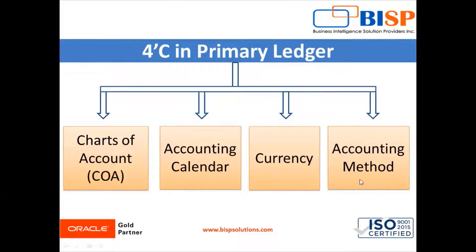The last component is the Accounting Method. Accounting method facilitates the definition of consistent accounting treatment for each accounting event class and event type for all sub-ledger applications. By assigning a different sub-ledger accounting to each related ledger, you can create multiple accounting representations of a transaction. Now let's go to the instance and create a primary ledger.